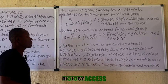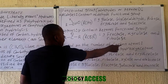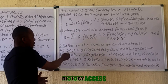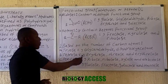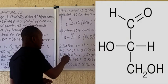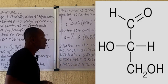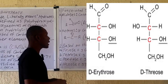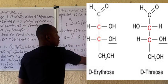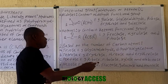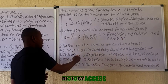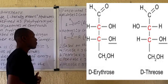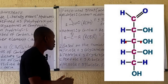The second classification of carbohydrates is based on the number of carbon atoms. We can classify them into trioses, which are composed of three carbon atoms — the glyceraldehyde structure is displayed on the board. Tetroses have four carbon atoms; examples include erythrose and erythrulose, whose structure on the board shows four carbon atoms.